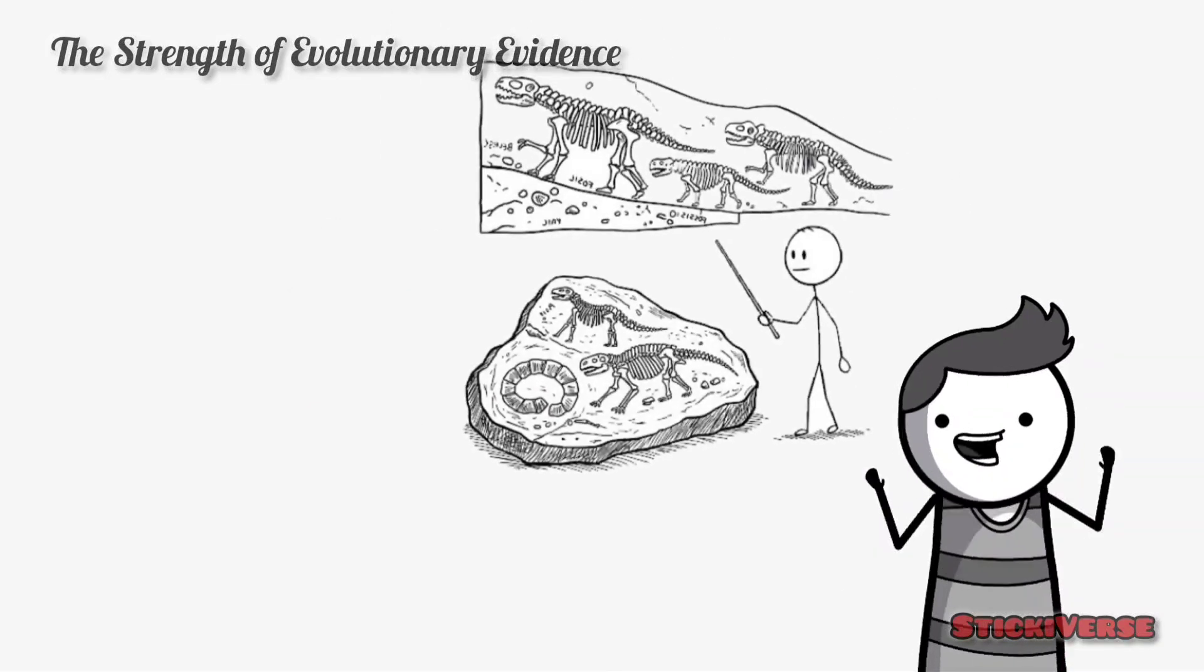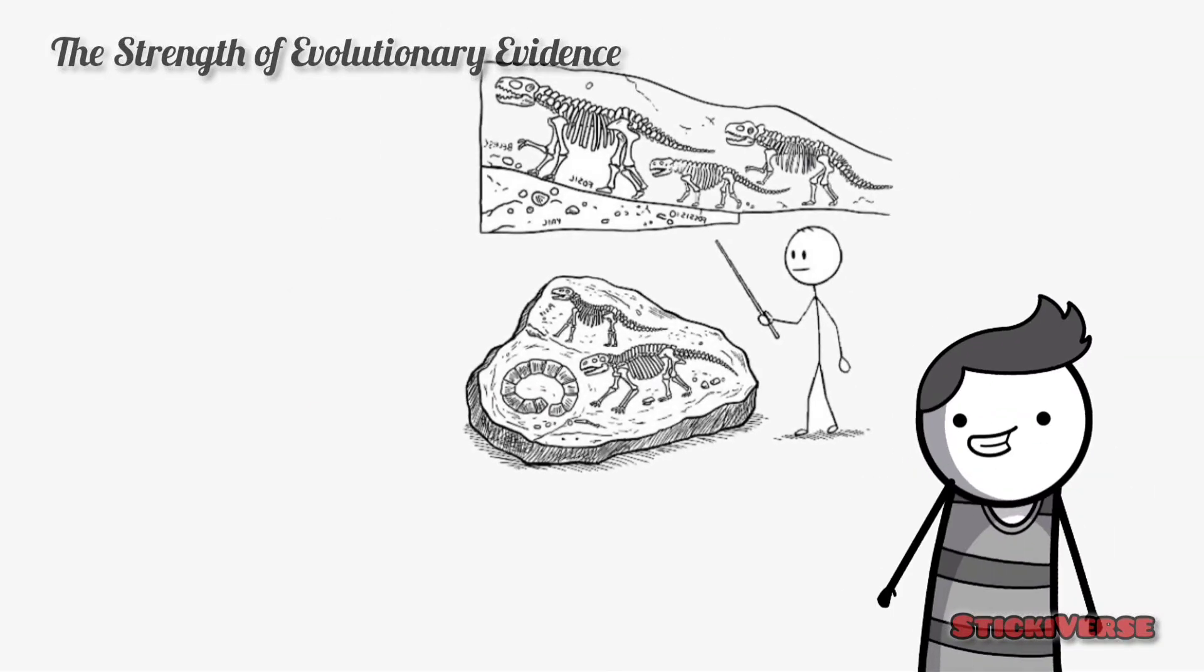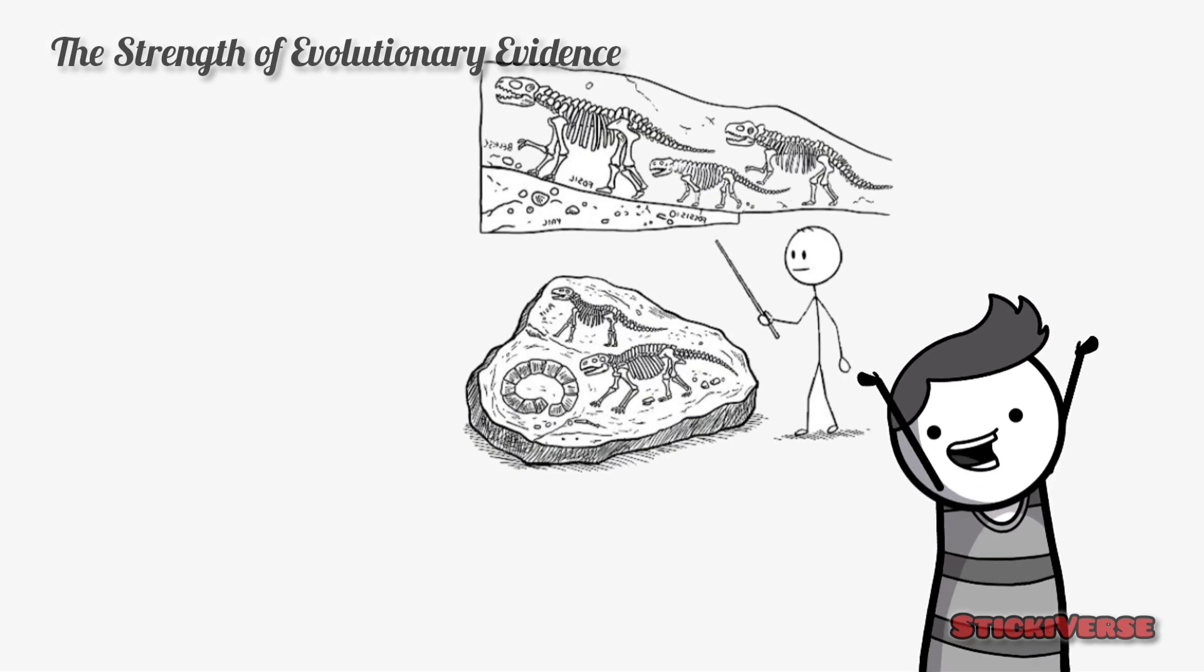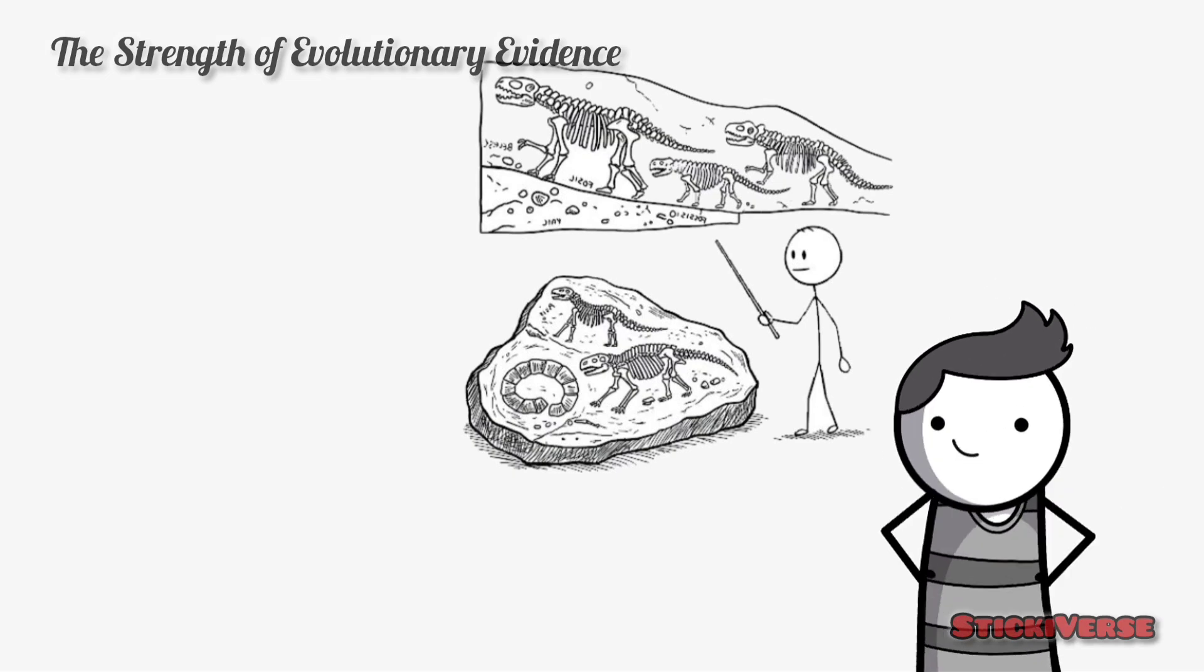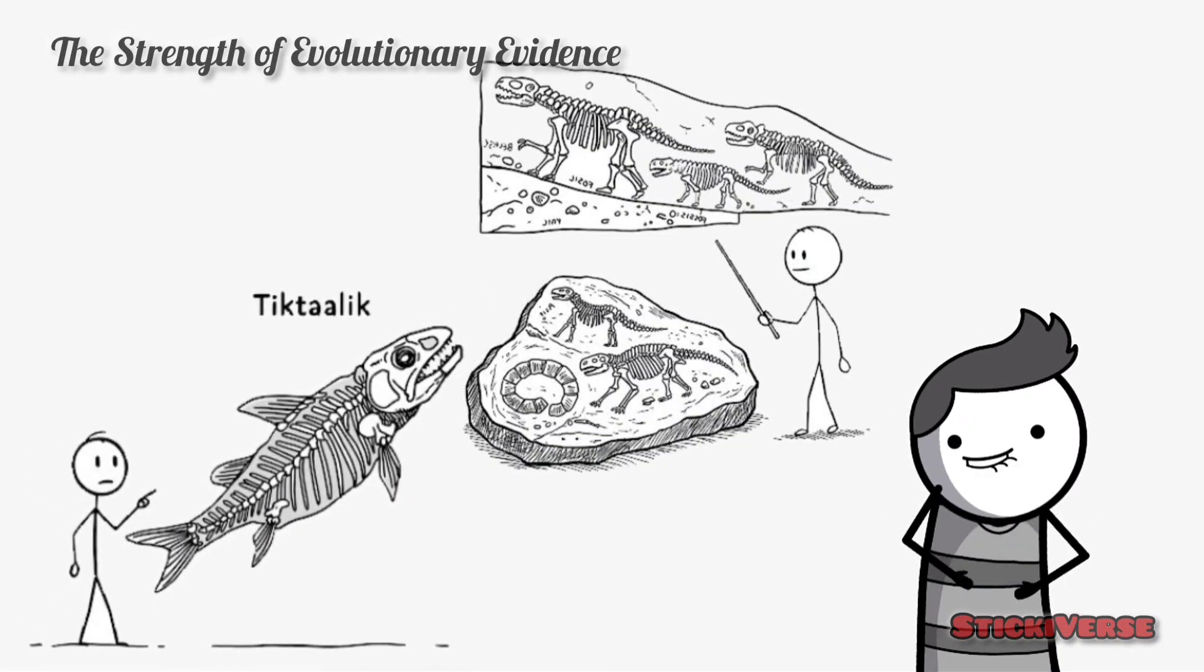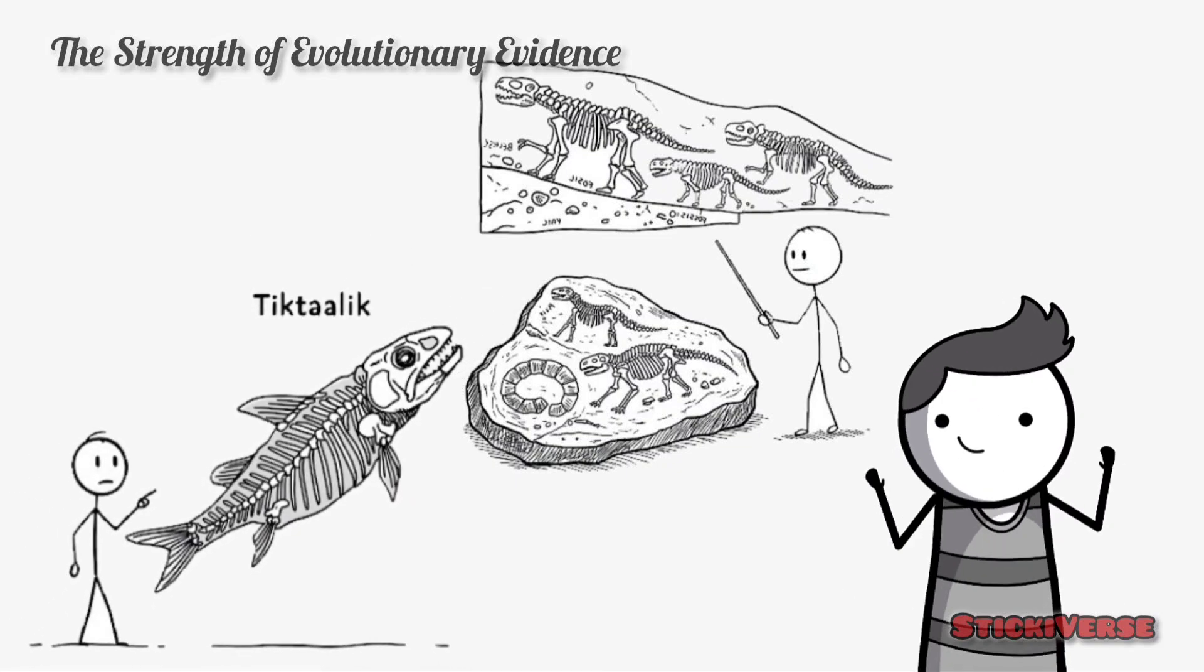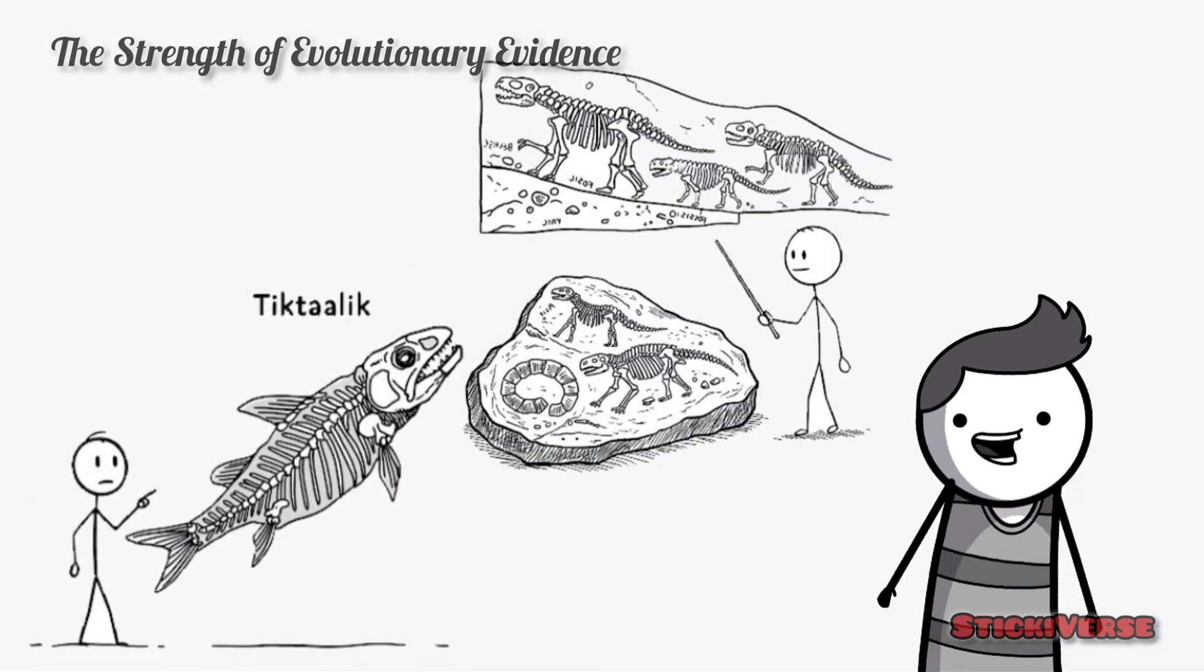First, there's the fossil record. Fossils provide snapshots of ancient life and show clear patterns of species evolving over millions of years. For example, the transition from fish to amphibians is clearly visible in fossils like Tiktaalik, a species that shows characteristics of both aquatic and terrestrial life.